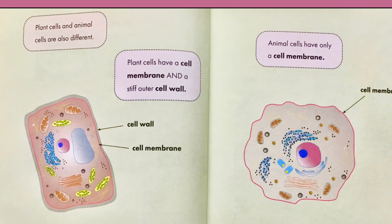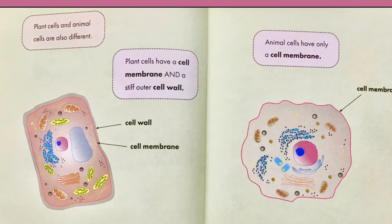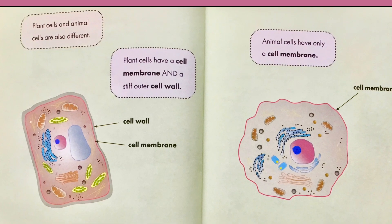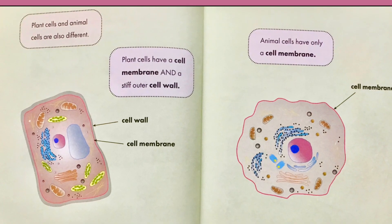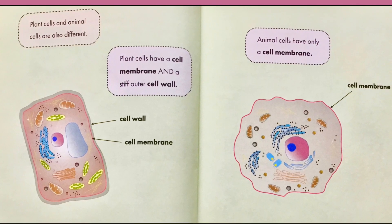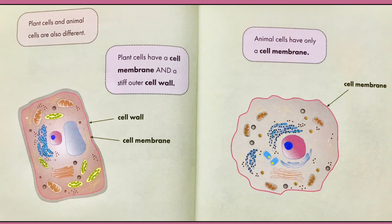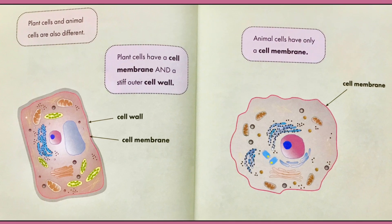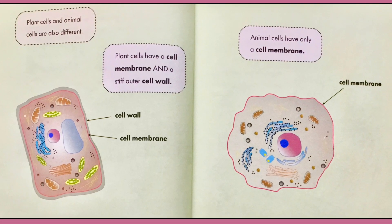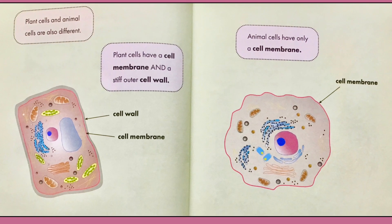Plant cells and animal cells are also different. Plant cells have a cell membrane and a stiff outer cell wall — the thicker outer part is the cell wall, and the narrow line inside it is the cell membrane. Animal cells have only a cell membrane, just that thin line.